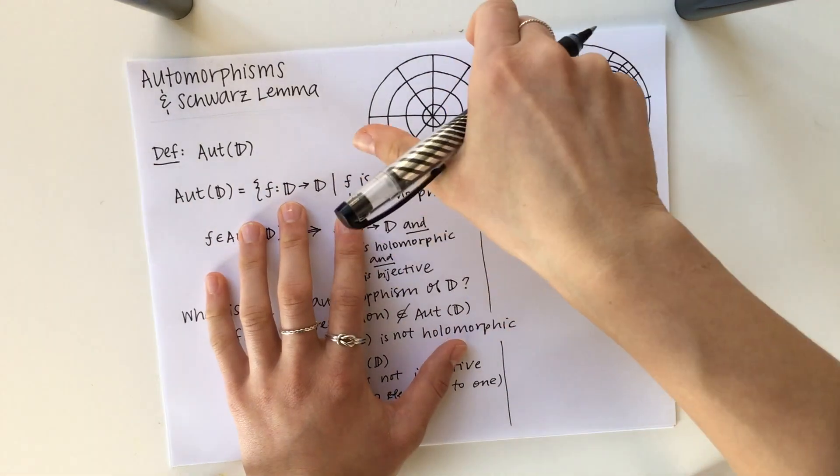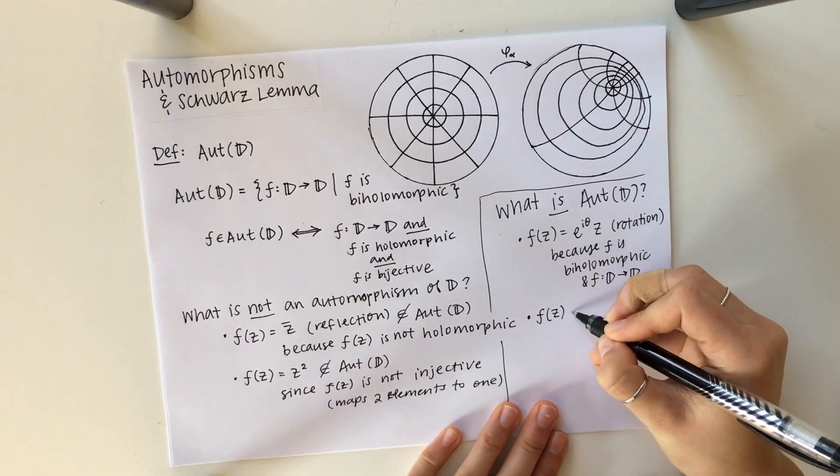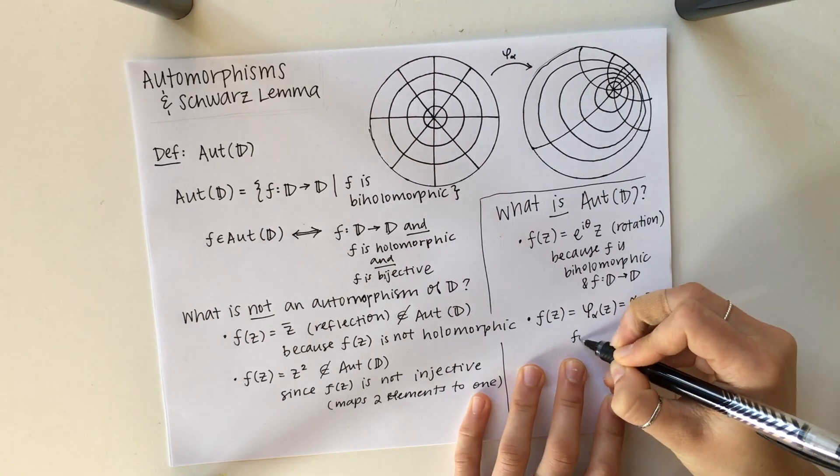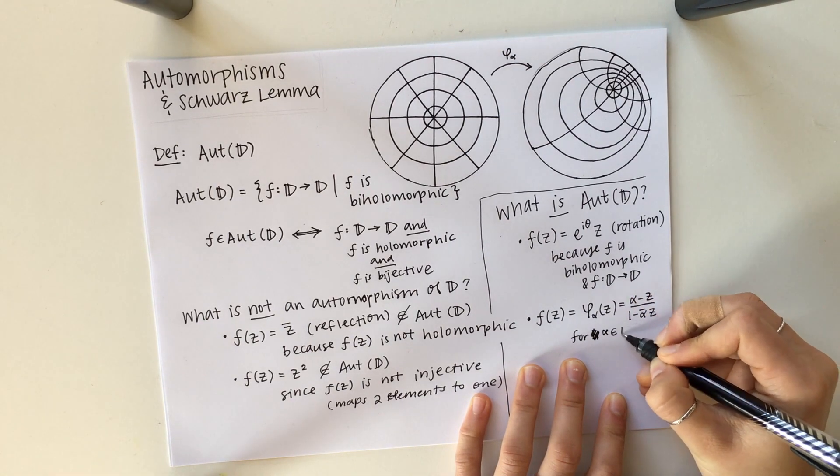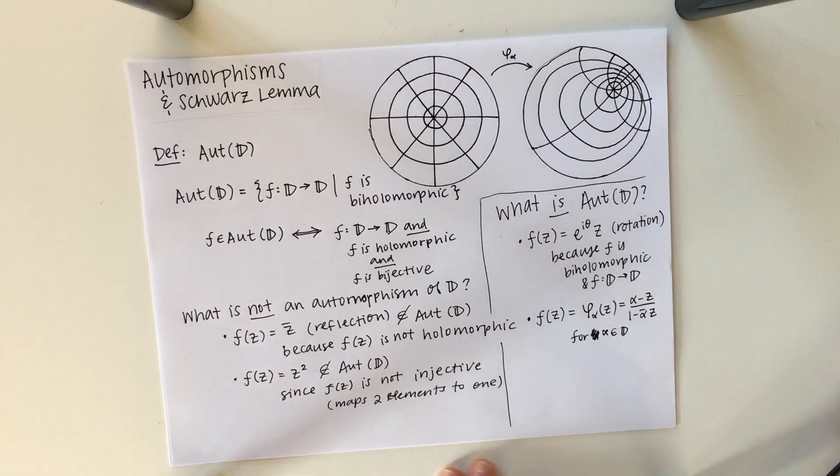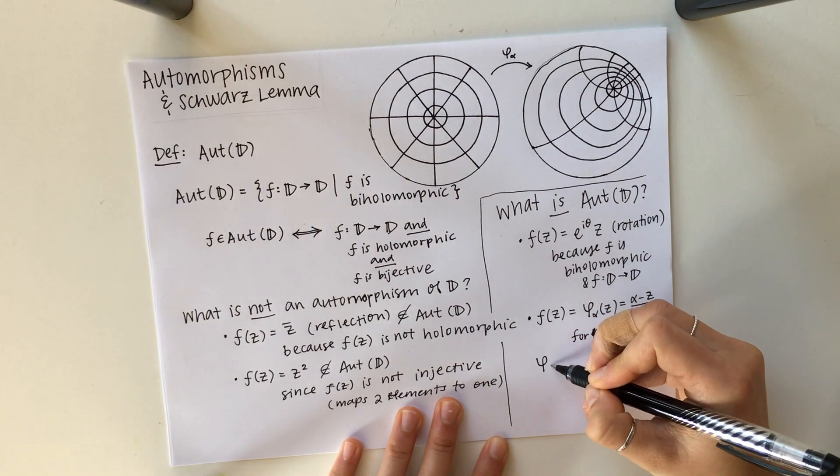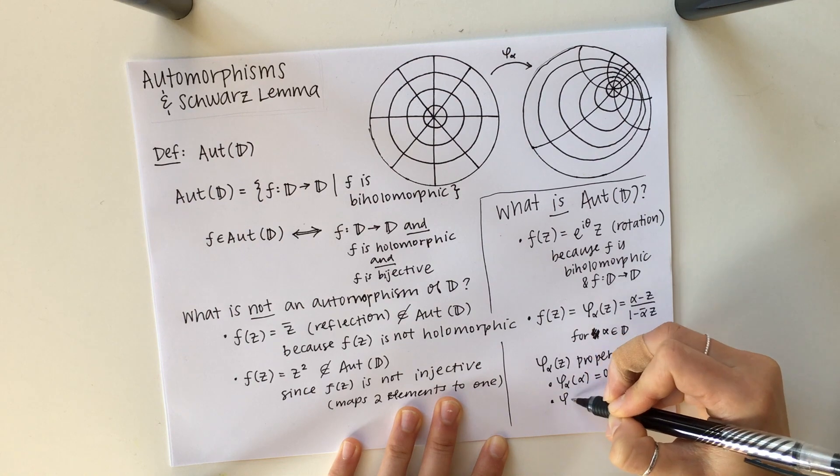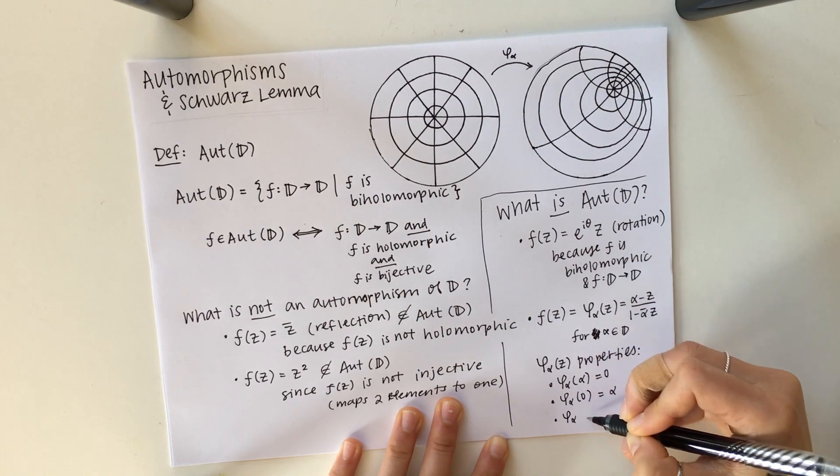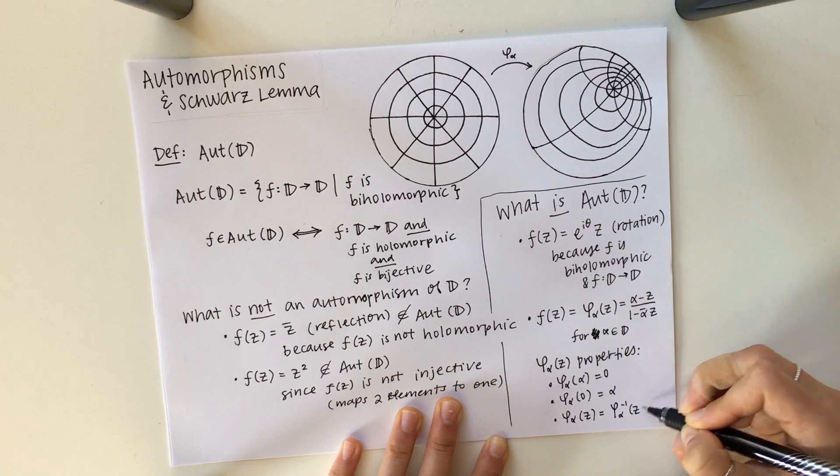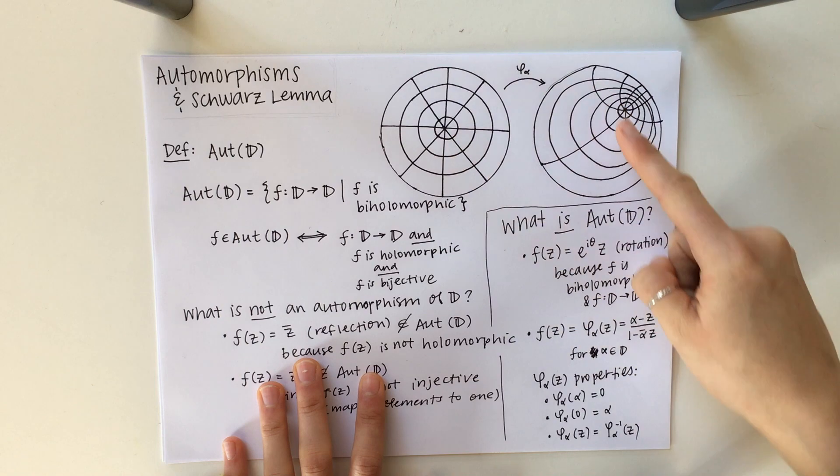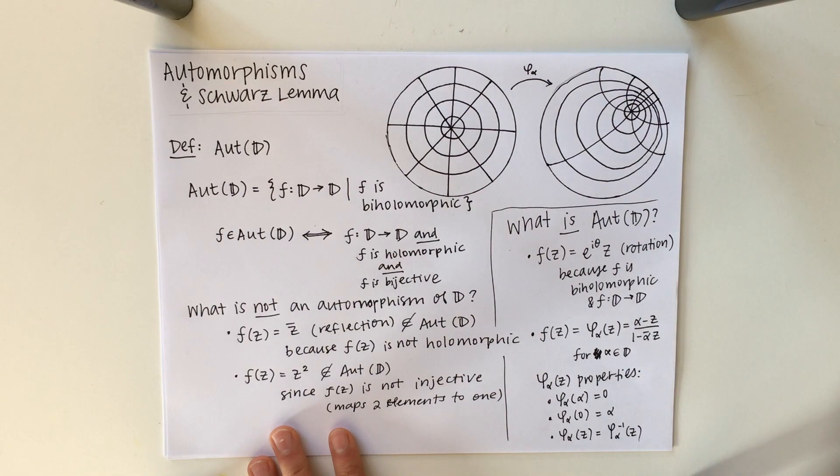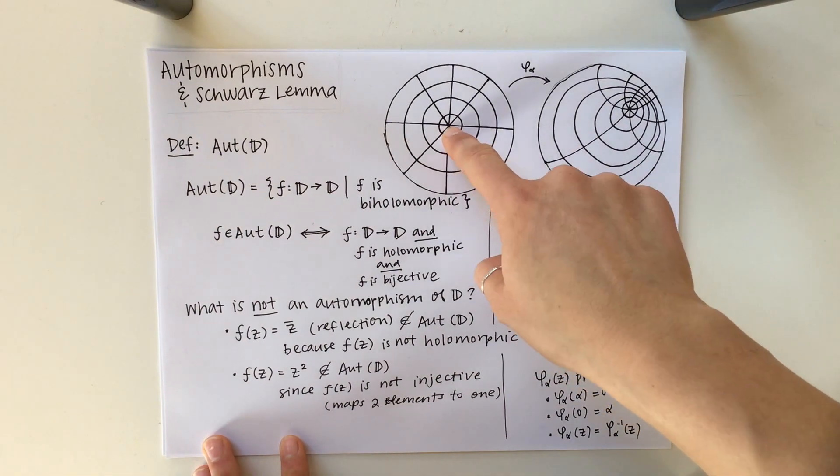The other one is a very interesting example that comes up a lot, and it's a function we will denote as phi sub alpha, given by the formula written down. This is not something I'd be able to come up with on my own, but it is just a very important concept in complex analysis. Phi sub alpha has some cool properties such that it maps alpha to zero, and it also maps zero to alpha, and it is equal to its inverse.